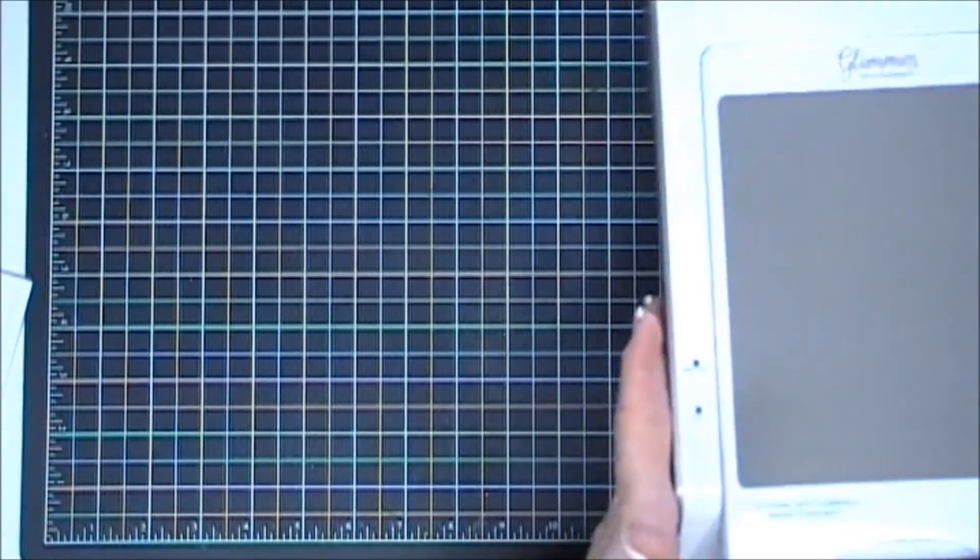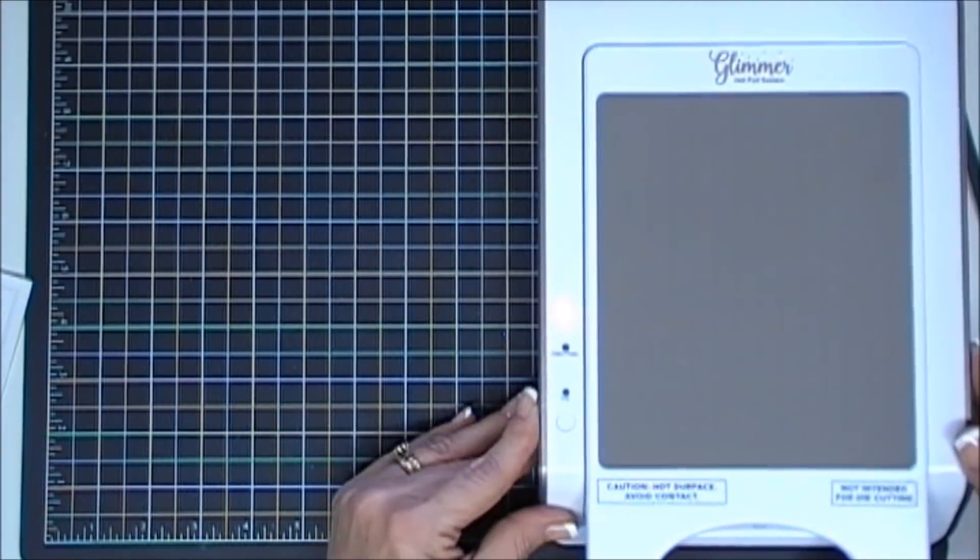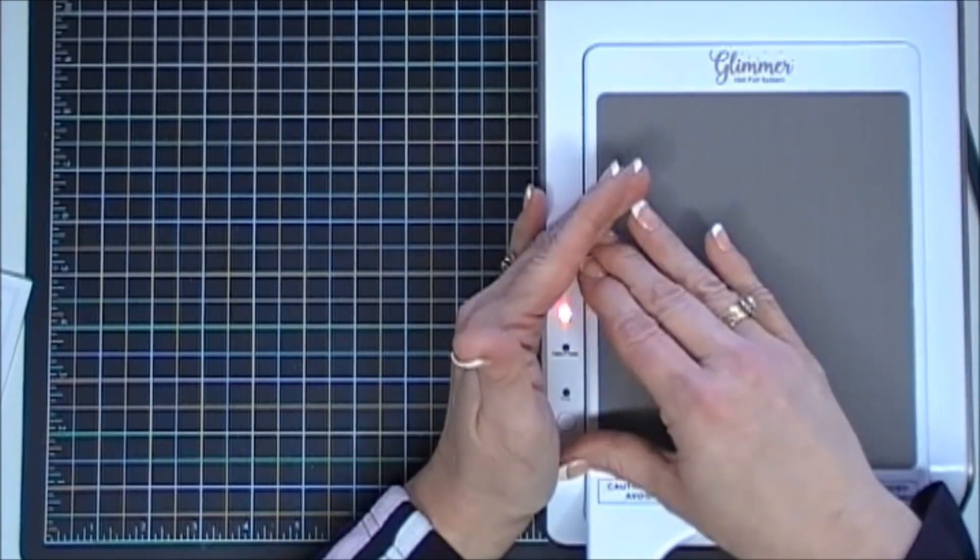I'm going to use a Spellbinders embossing folder that's super pretty and I'll link those down below as well. Those are items I'll be using today to create my two projects. So we're going to bring out our Glimmer Hot Foil machine. I already turned it on or turn the power button on.